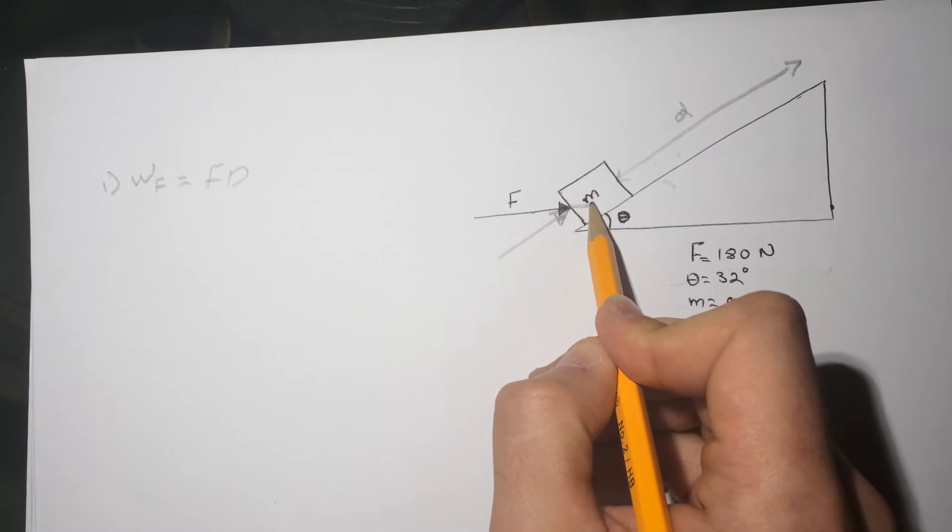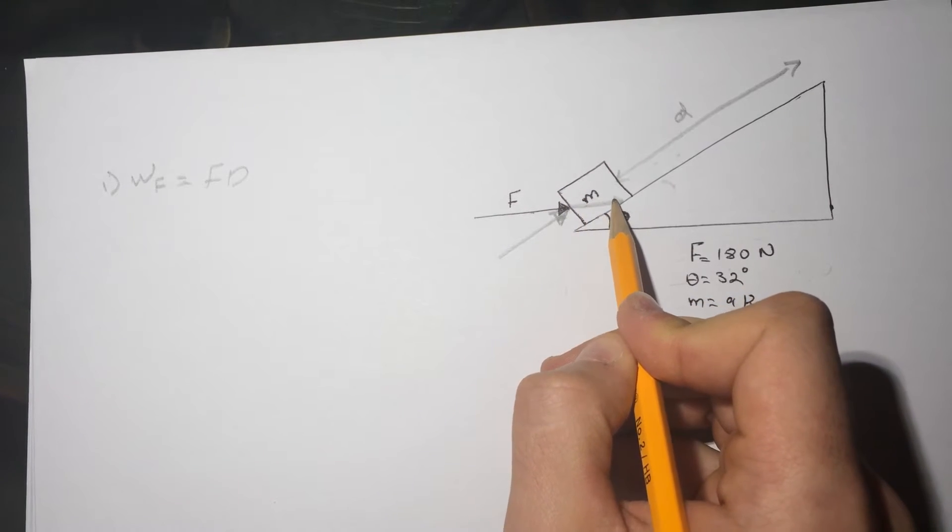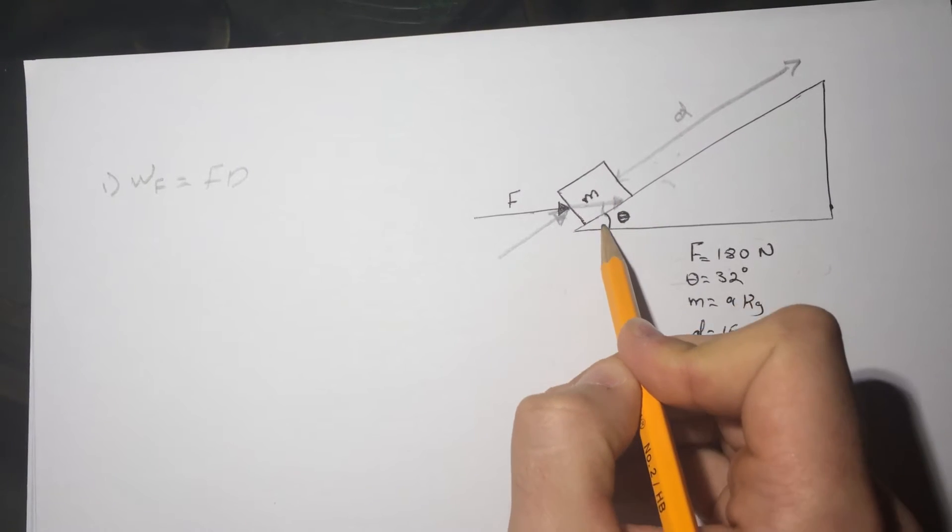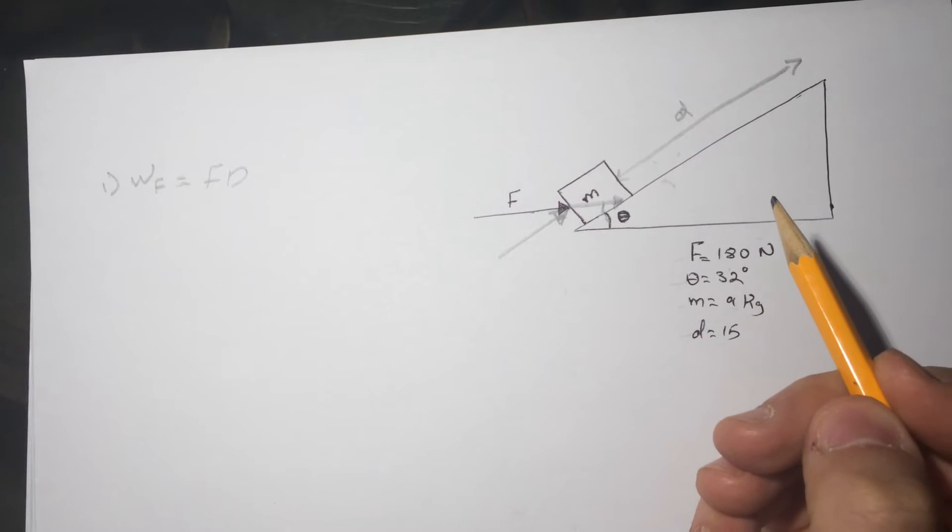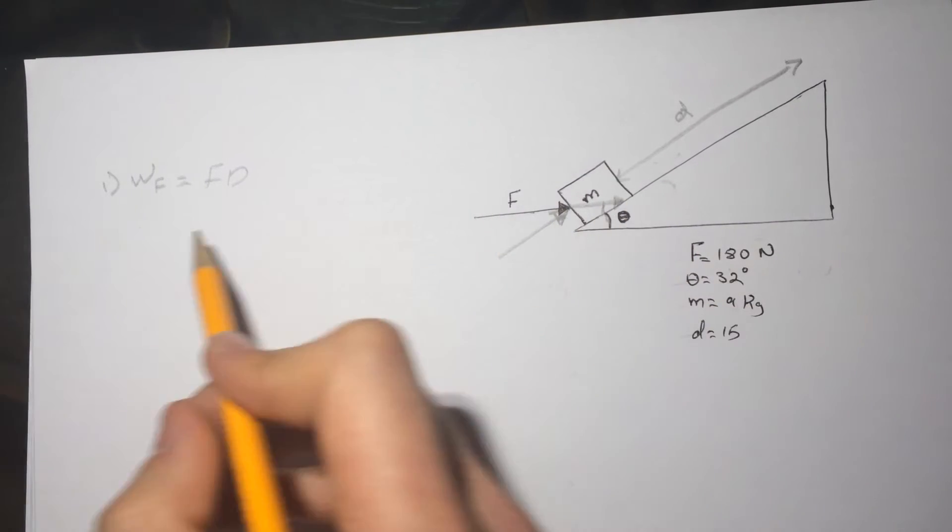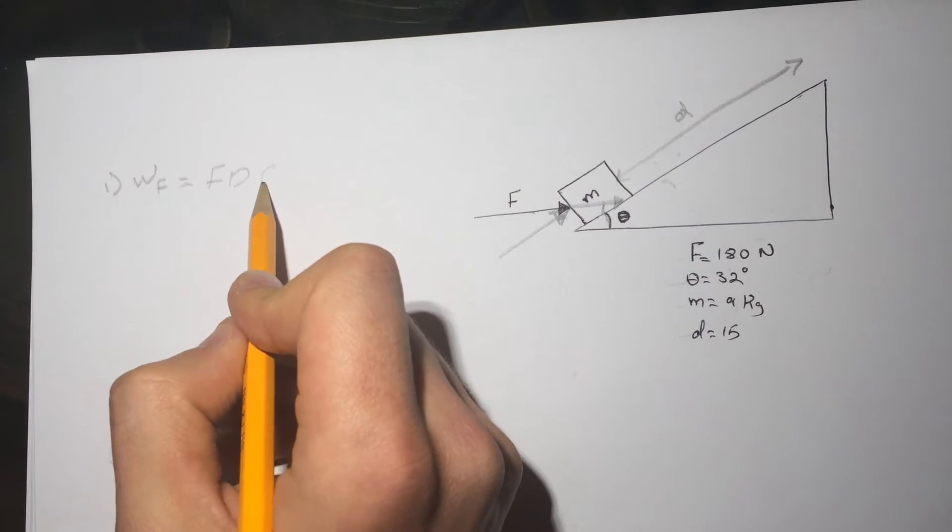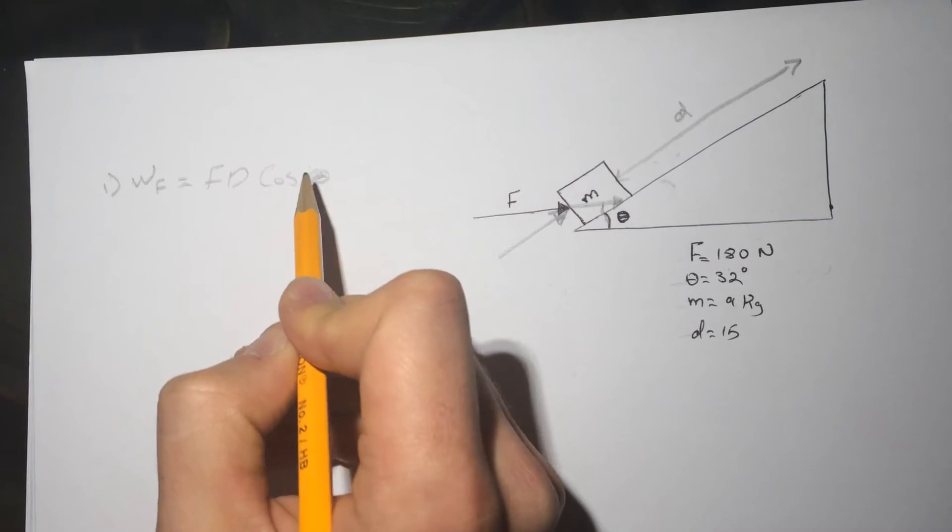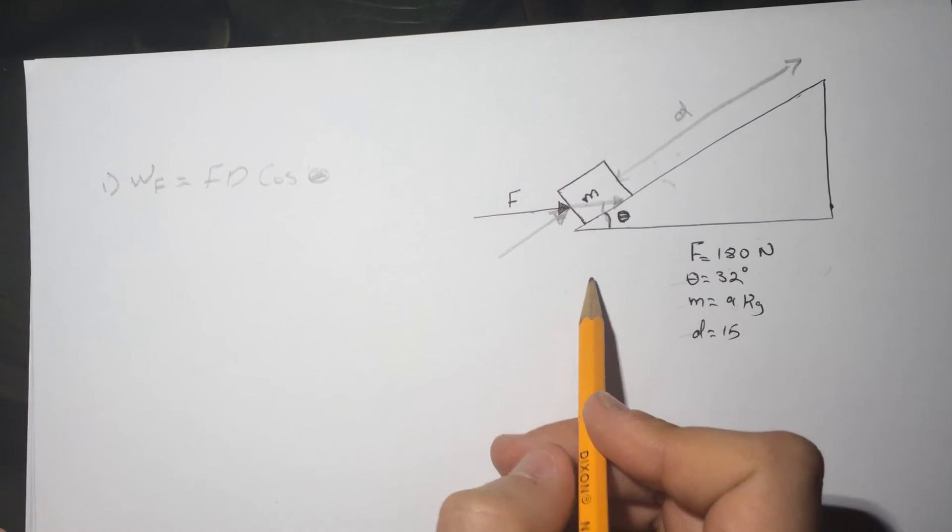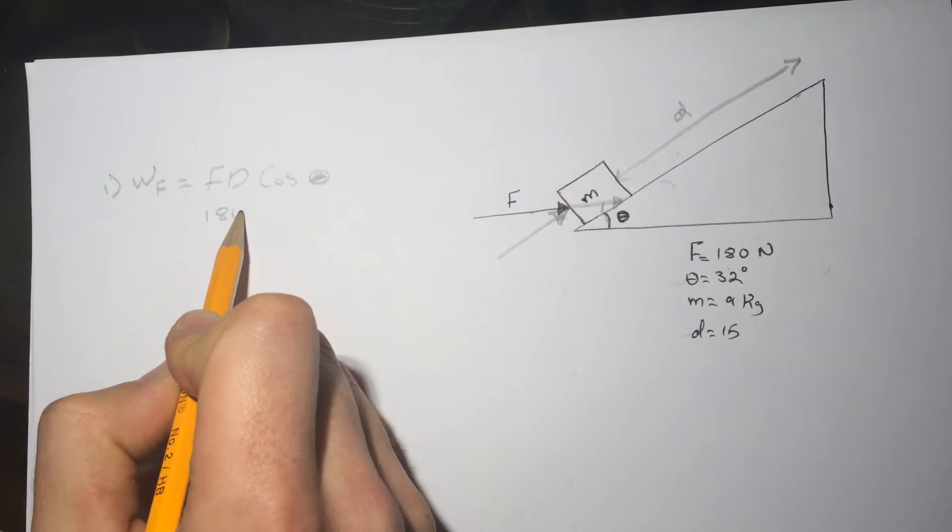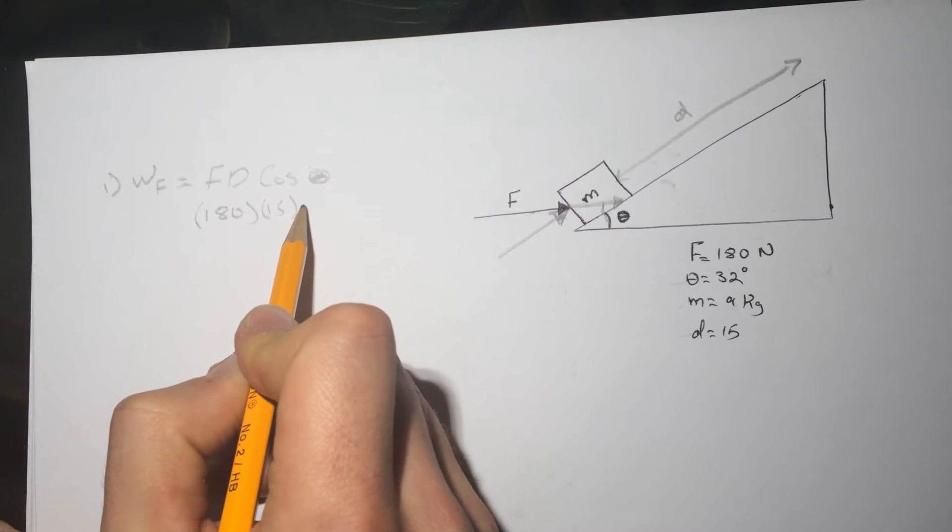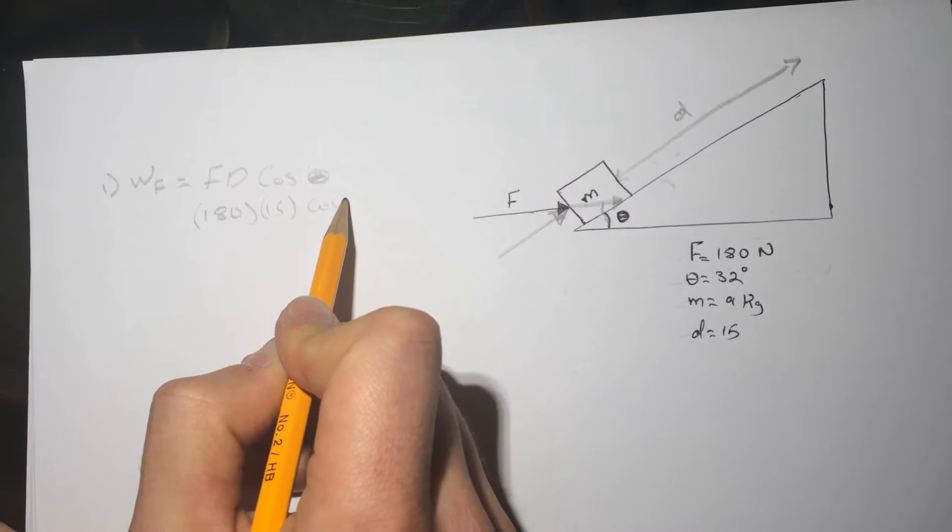If you extend this force to here you can see that this angle is the same as this angle here. So we're gonna add the cosine of theta. So if you plug in 180 times the 15 times the cosine of 32.